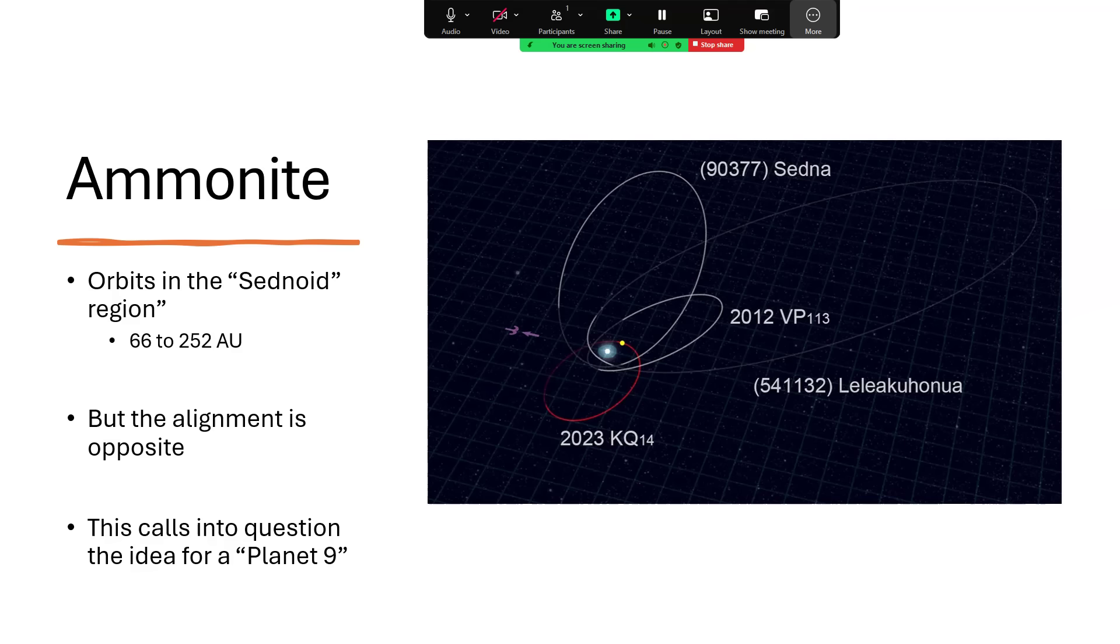But this is also in the scattered disk in an orbit that we sometimes refer to as the Sednoid region. So we have the asteroid Sedna, which is the first member of this class of objects that don't really come into the region of the Kuiper belt. And this is no exception. It goes from 66 to 252 astronomical units shown in that red orbit there. And we've got some of the other Sednoids marked there, just three of them. There are lots more now.